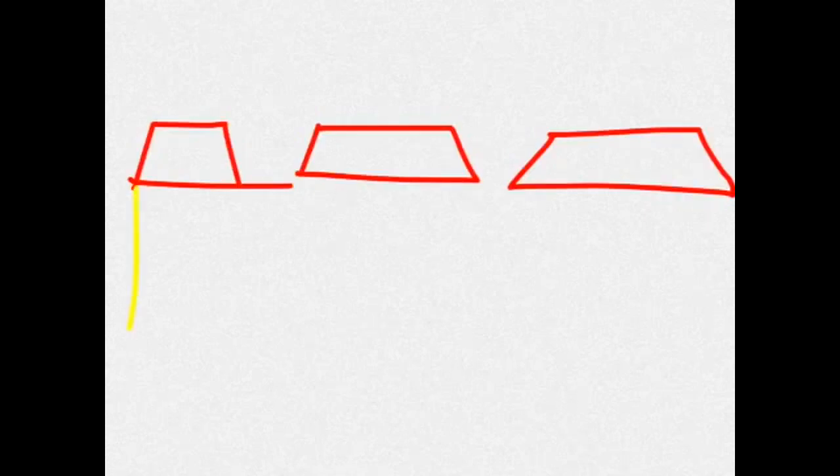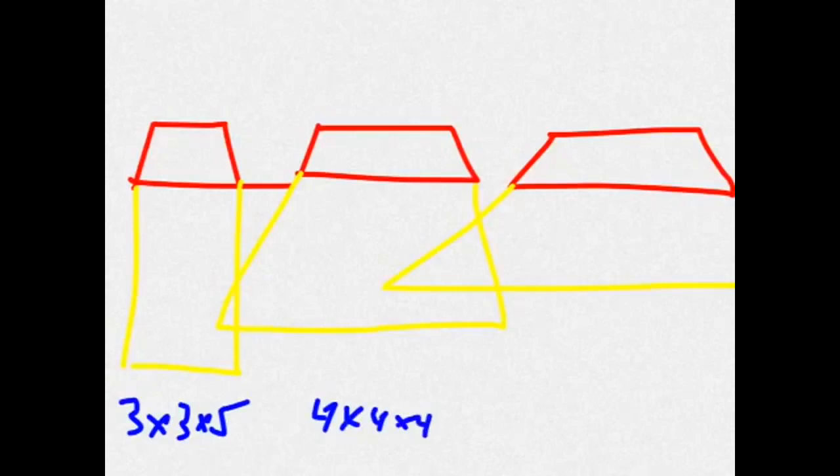Each one of these hoods has a different light distribution pattern, and that's super important. This pattern here is three by three, five feet deep. This light here is four by four, four feet deep. And this one here is like five by five, three feet deep.